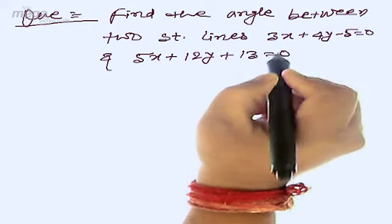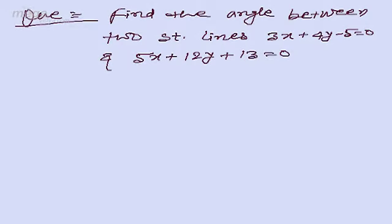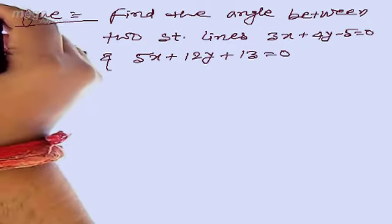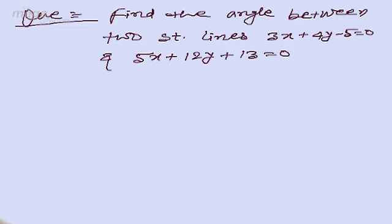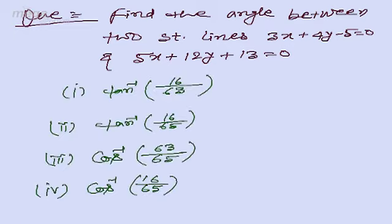Now, I am taking some example: find the angle between two straight lines 3x plus 4y minus 5 equal to 0 and 5x plus 12y plus 13 equal to 0. The student options are: first option is tan inverse 16 by 63, second is tan inverse 16 upon 65, third is cos inverse 63 by 65, and fourth is cos inverse 16 by 65.